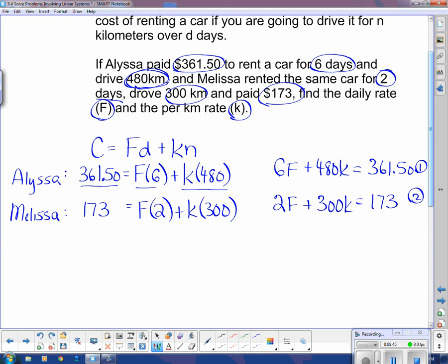Now, if you take a look, if I can multiply this equation, equation 2, if I multiply it by 3, then I'll be able to get a 6 in front of this F that's already in front of the other F. So I'm going to multiply both sides of that equation by 3. And the way I write it down, I say 3 times equation 2. So that's going to give me 6F plus 900K, and that's going to equal 173 times 3, which is 519. And that's our equation 3.